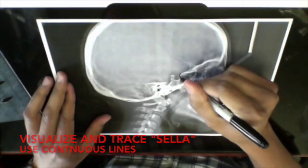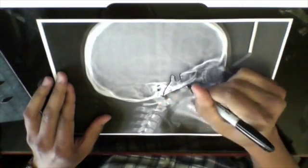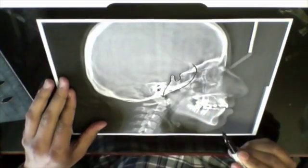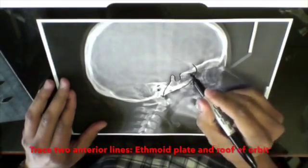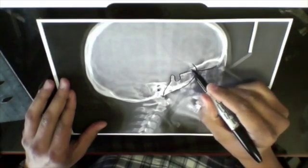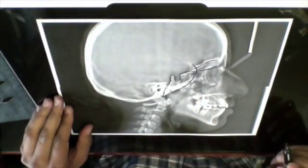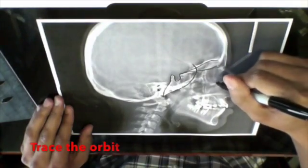Trace sella turcica, then continue backwards and downwards towards the anterior rim of foramen magnum. Continue forward and upwards tracing the greater wing of sphenoid bone. Trace the rest of the anterior cranial base anterior to sella. These two lines represent the cribriform plate of ethmoid bone and the roof of the orbital socket.